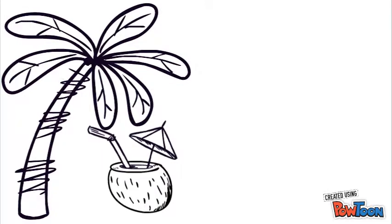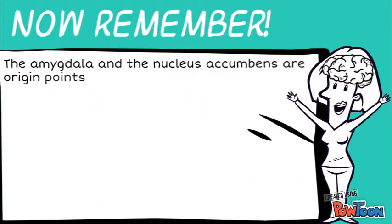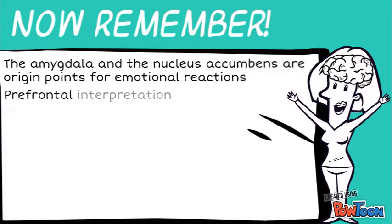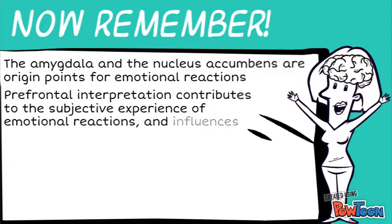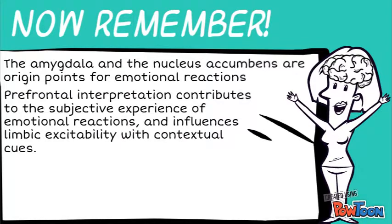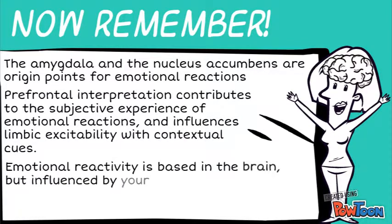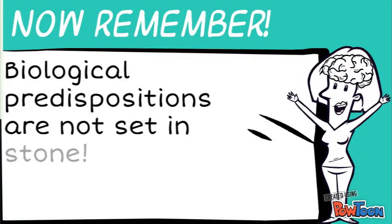Now remember, the amygdala and the nucleus accumbens are origin points for emotion reactions. But prefrontal interpretation contributes to the subjective experience of emotional reactions and influences limbic excitability with contextual cues. Emotional reactivity is based in the brain but influenced by your decisions and environment. Biological predispositions are not set in stone.